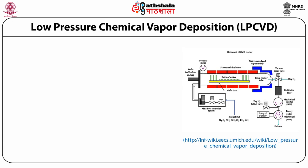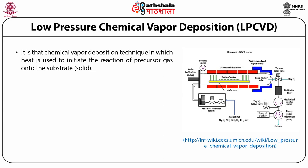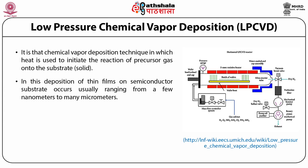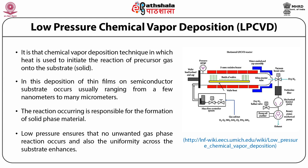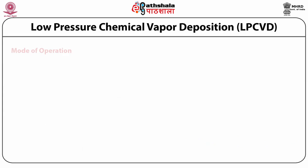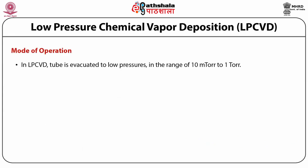Let us now discuss LPCVD in detail. It is the chemical vapor deposition technique in which heat is used to initiate the reaction of the precursor onto the substrate. Deposition of thin films on semiconductor substrates actually occurs in the range from a few nanometers to many micrometers. This figure shows the schematic of an LPCVD reactor. Low pressure ensures that no unwanted gas phase reaction occurs, and also the uniformity across the substrate is enhanced.